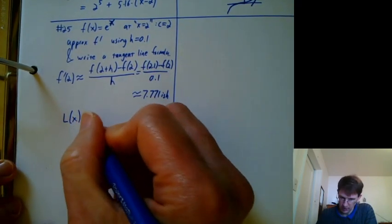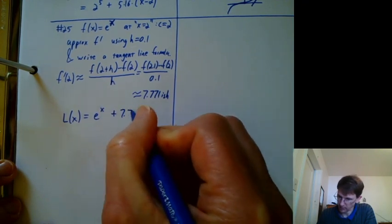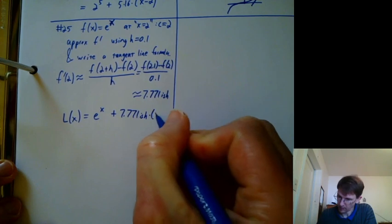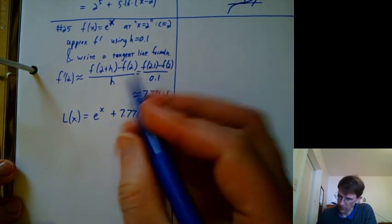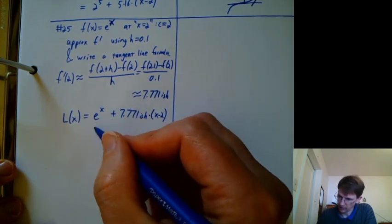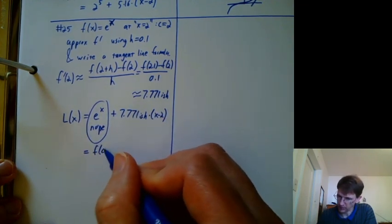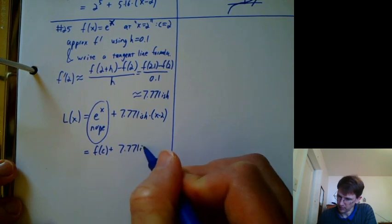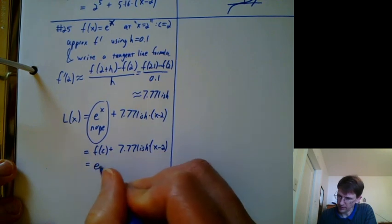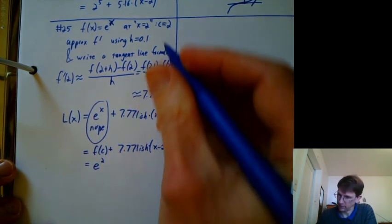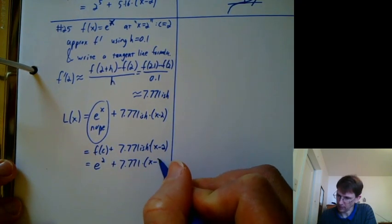And then my tangent line formula would be l of x equals e to the x plus 7.771-ish times x minus 2. Does that look good? Take a sec to think about that. No, I should not have an x here. What I should have is f of c which is e to the 2 not e to the x. c was defined to be 2. So it should be e to the 2 plus 7.771-ish times x minus 2.